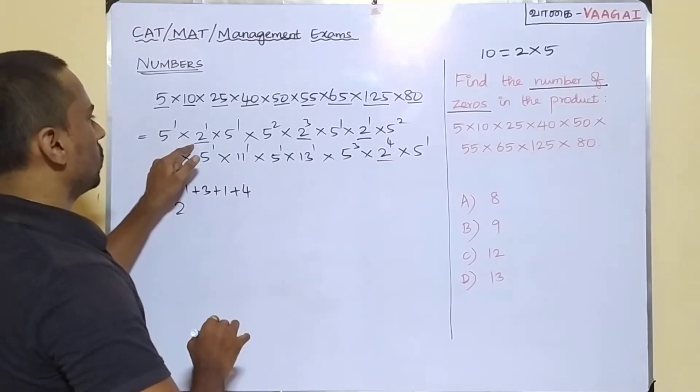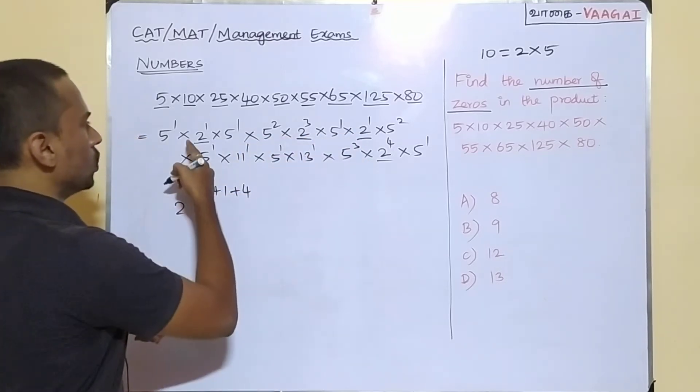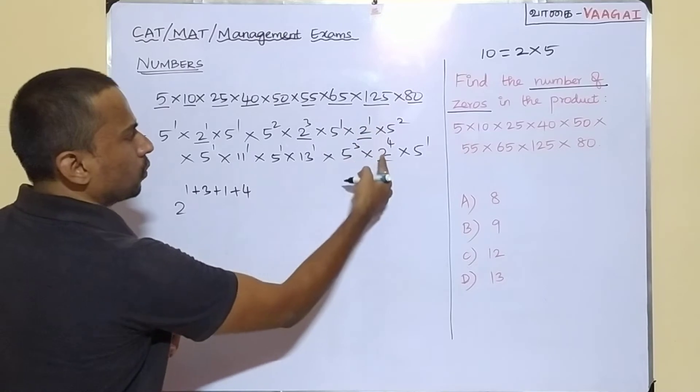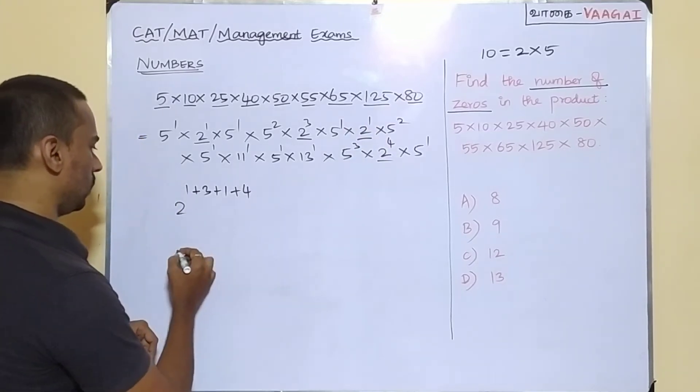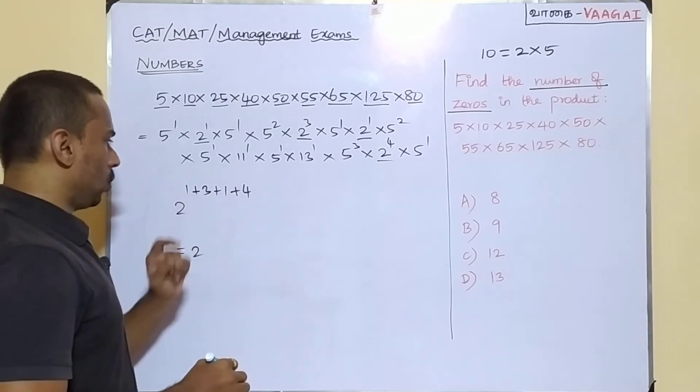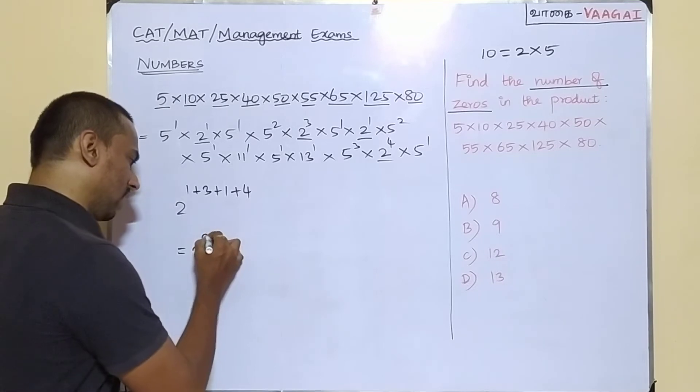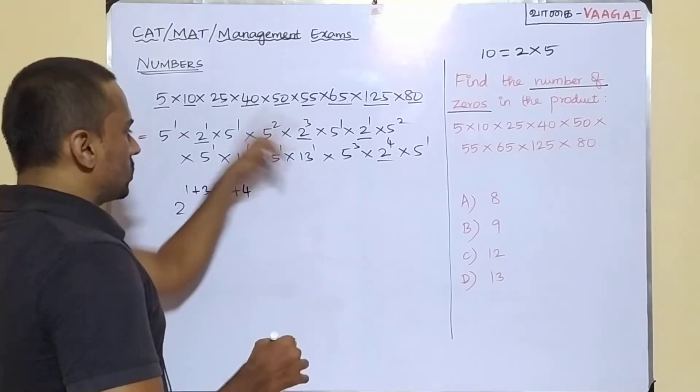There are only 4 expressions with 2. So 2 power 1, 2 power 3, 2 power 1, 2 power 4. They all get multiplied together and totally we'll have 1 plus 3 plus 1 plus 4, which will give us 2 power 9.